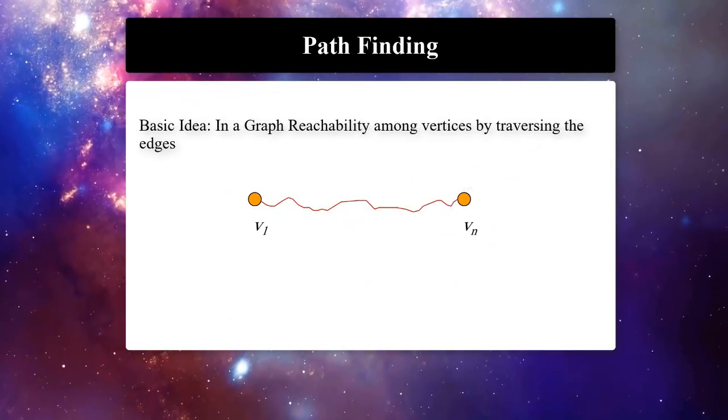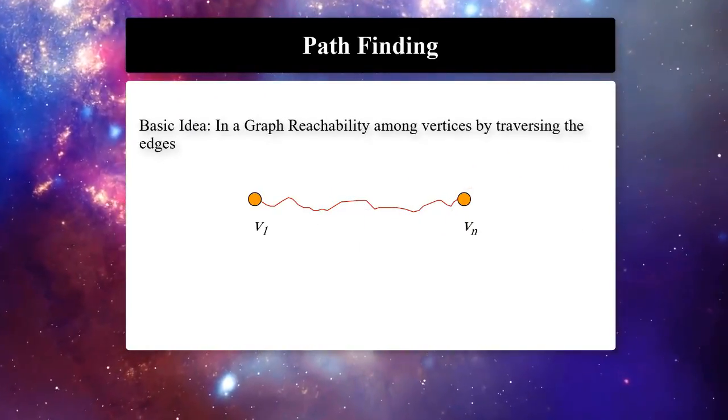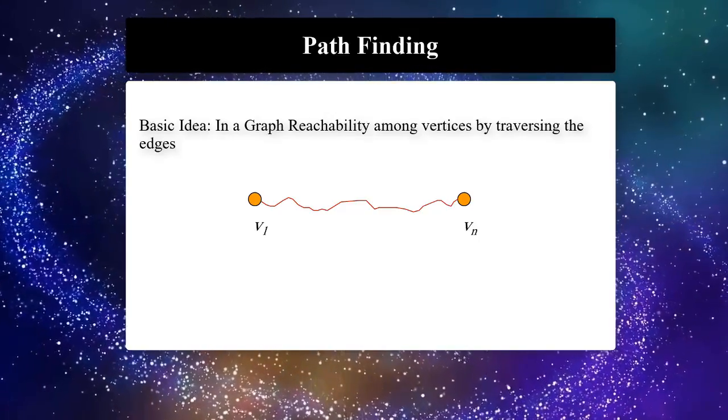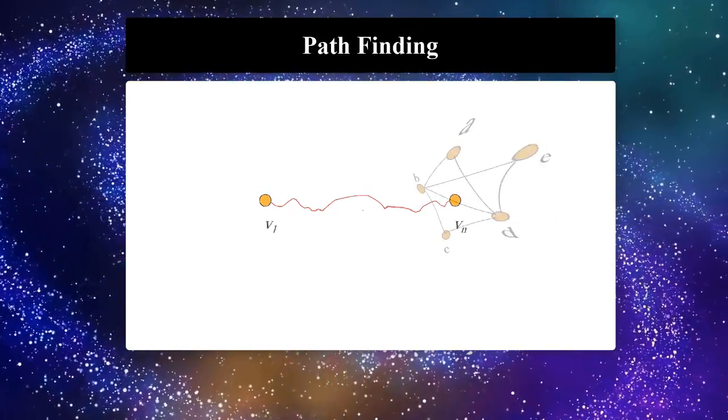The basic idea of connectivity is reachability among vertices of a graph by traversing its edges. This can be defined formally and categorized in five types.